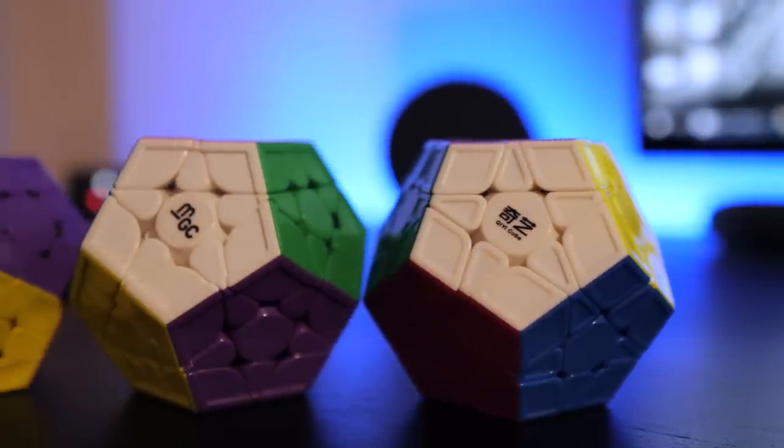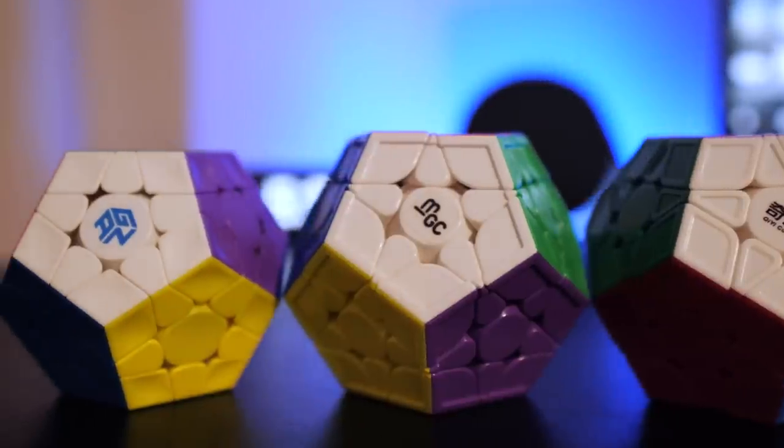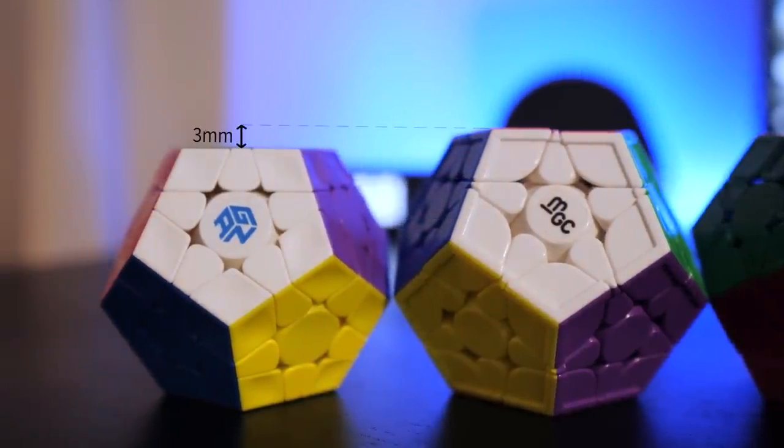In addition to that, this thing is tiny. Speedcubers can distinguish between puzzles just one millimeter different in size. This one is nearly three millimeters smaller than its counterparts.